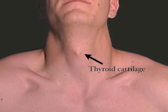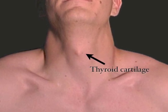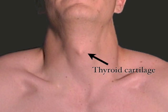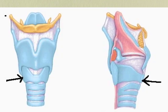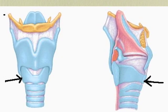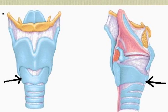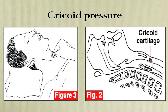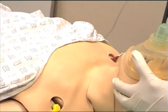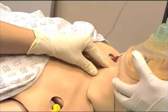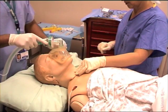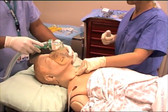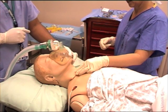The cricoid cartilage can be identified on a patient by palpating the thyroid cartilage, otherwise called the Adam's apple, and following down to feel the rigid cricoid cartilage. These two cartilages are connected by the cricothyroid ligament. A perpendicular pressure applied on the cricoid using the thumb, index and middle finger will theoretically occlude the esophagus against the cervical vertebrae. The Difficult Airway Society recommends the use of 10N pressure when the patient is about to be induced and 30N once the patient is asleep.